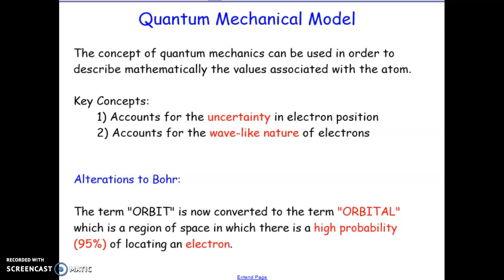We're going to continue our look into the quantum mechanical model and review a few concepts. The key concept is that we no longer have certainty about where an electron is going to be found. Instead of planets orbiting the Sun, we have bees traveling around the beehive — electrons are not fixed in a certain pathway around the nucleus, but move around in a specific space most of the time, because there is uncertainty in the location and speed of an electron.